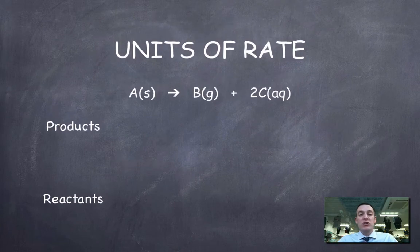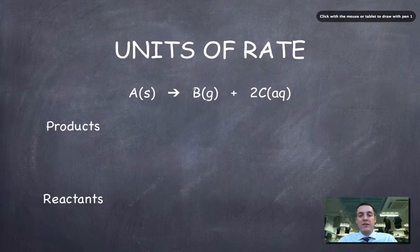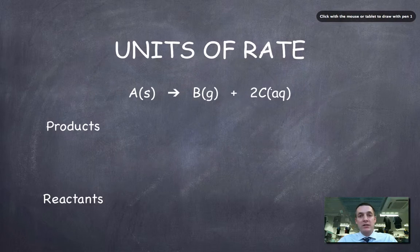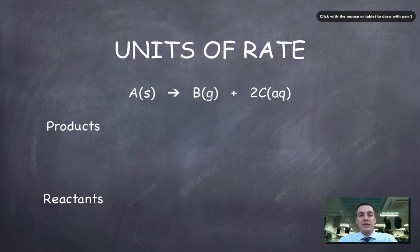Now, I say it's usually measured in moles per dm cubed per second, and that's because we don't always have things that are in solution. So if we look at the products here again, I could see that C is in solution, so I could measure this rate in terms of its concentration, but here B is a gas.